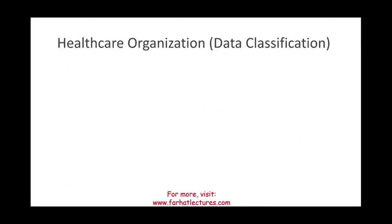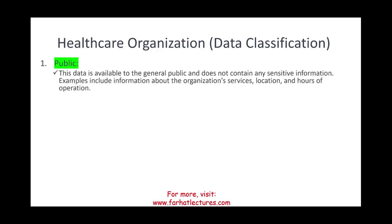For our example, let's assume we are dealing with a health organization. A potential data classification could start with public data — data that is available to the public and does not contain any sensitive information. Examples could include service locations and hours of operation of the health organization. That is public data.